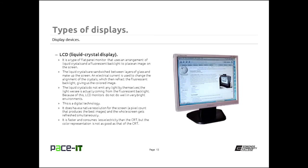Now let's talk about the LCD — the liquid crystal display. An LCD is a type of flat panel monitor and it uses an arrangement of liquid crystals and a fluorescent backlight to place the image on the screen. The liquid crystals are sandwiched between layers of glass and polarizing material. An electrical current is sent through that liquid crystal matrix and it changes the orientation or alignment of the crystals, which then refract the fluorescent backlight. That gives us the color image. When you're looking at an LCD, what you're really seeing is the light from the backlight being refracted back out.